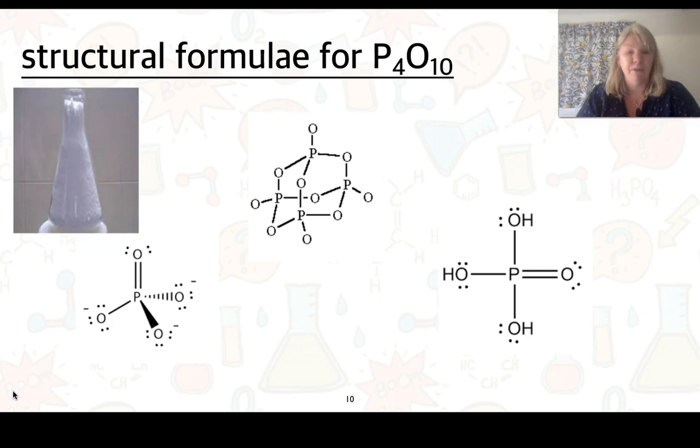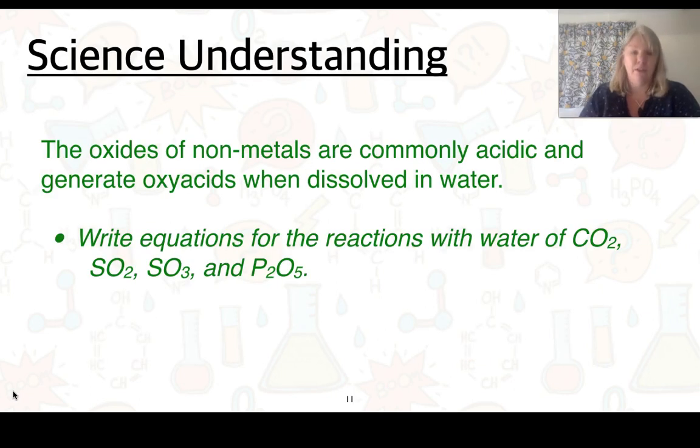We also have P4O10. This structure is not as easy to draw, but it is required for stage 1 chemistry. And then here we have our PO4 3- and down here our H3PO4. So they're the structures that you need to be able to draw in stage 1 chemistry.